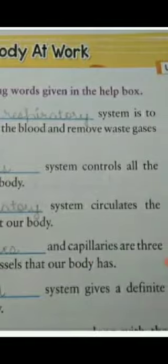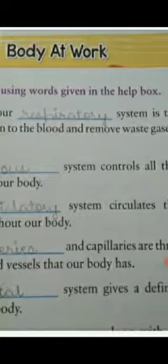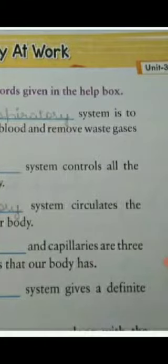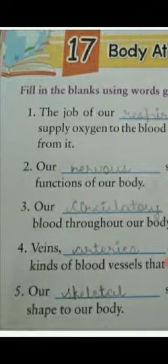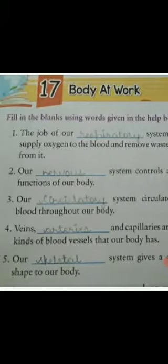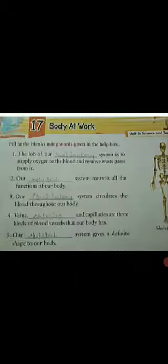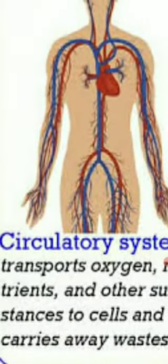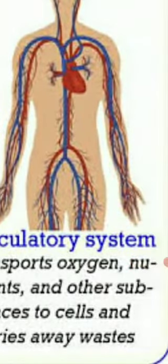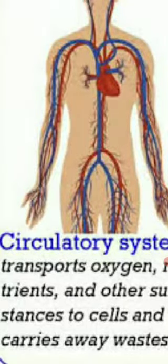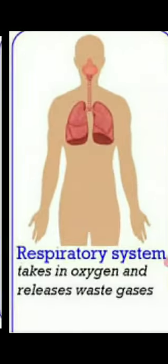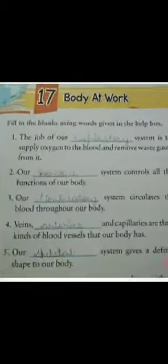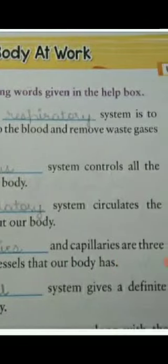Third one: our DASH system circulates the blood throughout our body. This is the circulatory system. It delivers oxygen, nutrients, and other substances to cells and carries away waste. Circulatory system puri hamari body ko oxygen supply karti hai, nutrients jo bhi hota hai unko supply karti hai, aur jo waste hota hai use bahar karti hai. Yeh puri sharir mein blood pahunchati hai.